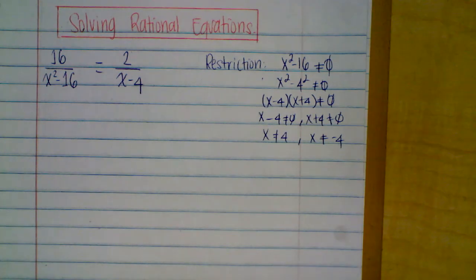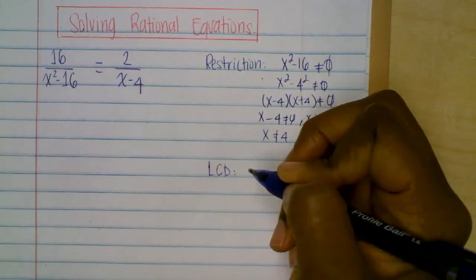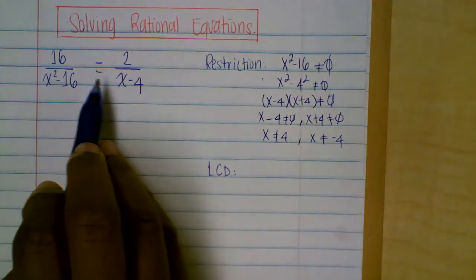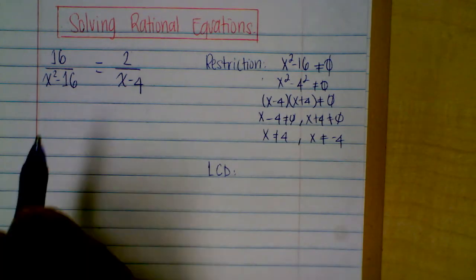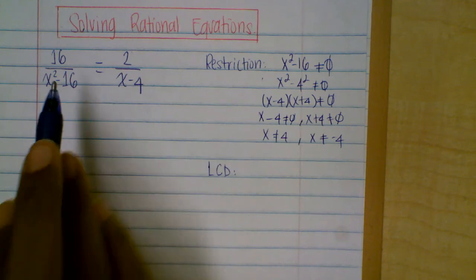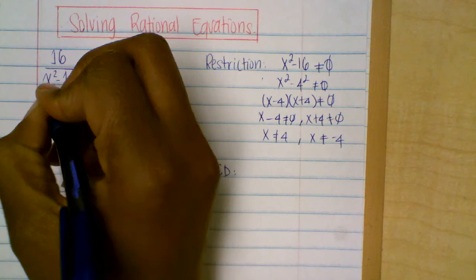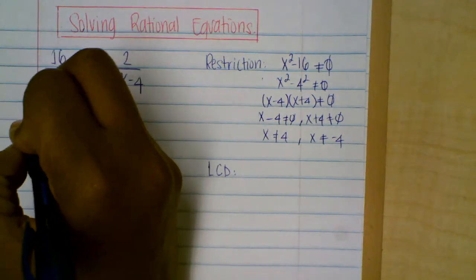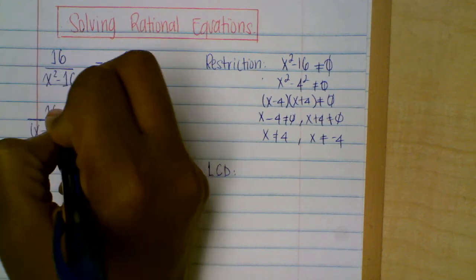So now what do we do next? We're going to identify the LCD — the least common denominator. We want the same denominator. I know that x squared minus 16 factors as x minus four times x plus four — that's the difference of two perfect squares.